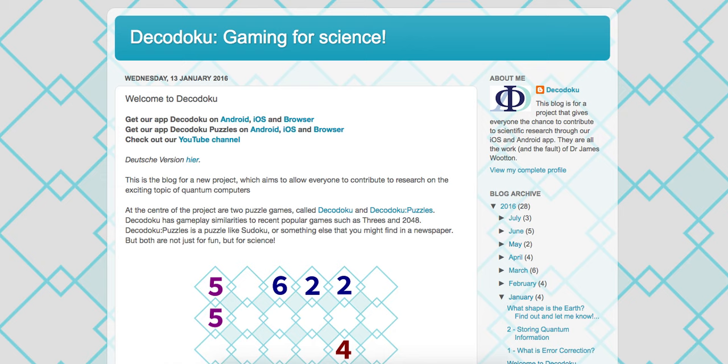Hello, I am Dr. James Witten of the Decodoku Project. The Decodoku Project is based around a series of puzzle games that you can use to take part in the science of quantum error correction. This video is in a series that presents the ways that we, scientists, use to solve similar problems to this, so that you can take our secrets and improve on us.